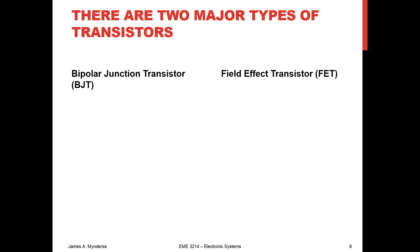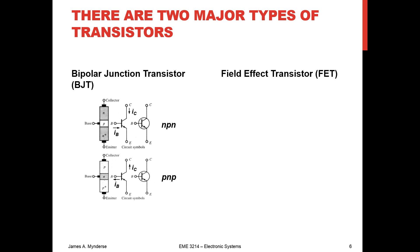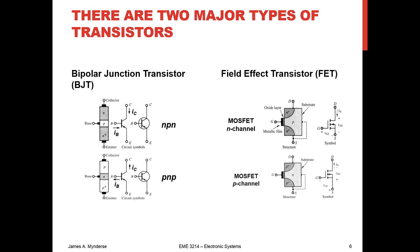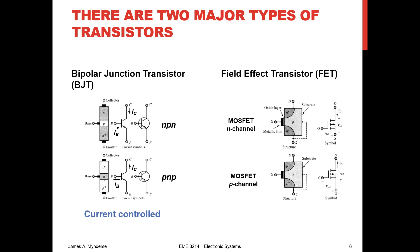We've got two major types of transistors: bipolar junction transistors and field effect transistors. For BJTs, we have NPN and PNP. For FETs, we have N-channel and P-channel MOSFETs. The big difference is that BJTs are current-controlled — we apply a current to the base, and that allows current to flow from collector to emitter. The base is labeled B, collector is C, and emitter is E. FETs are voltage-controlled — we apply a voltage to the gate G, and that allows current to flow from drain to source, or the other way around.